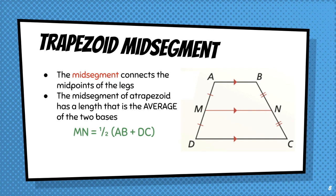So in this diagram, MN is equal to one-half the quantity of AB plus DC.